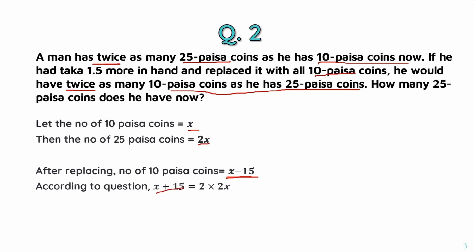According to the question, x plus 15 for the 25-paisa side. This equation equals 2 into 2x, meaning 2 into 2x equals 2 into 10 equals 20. So the position of the 10-paisa coins gives x equals 10.